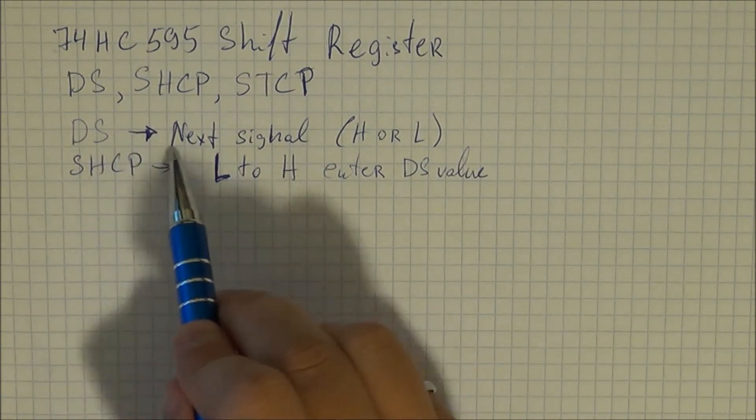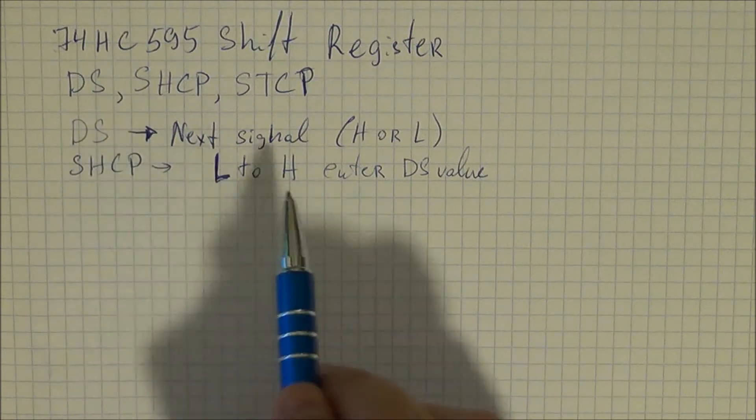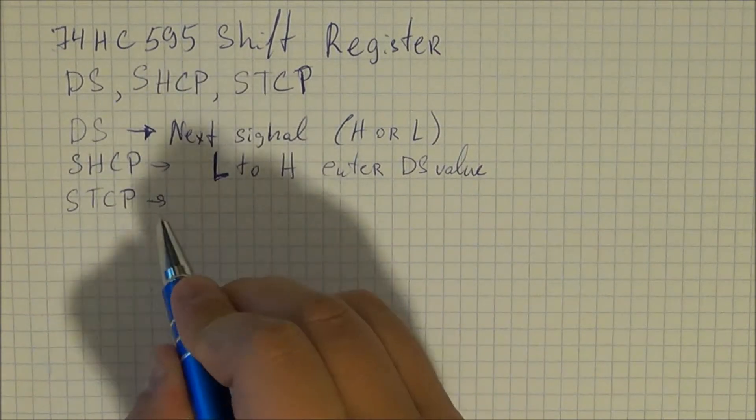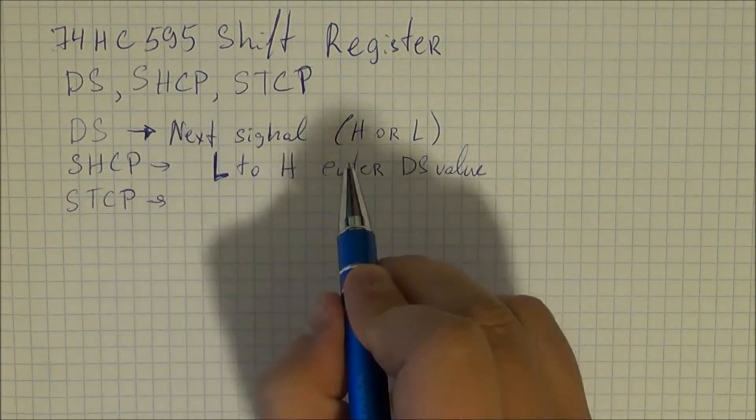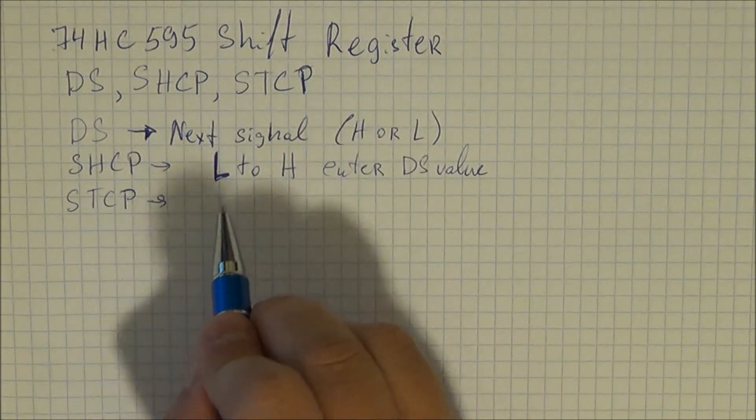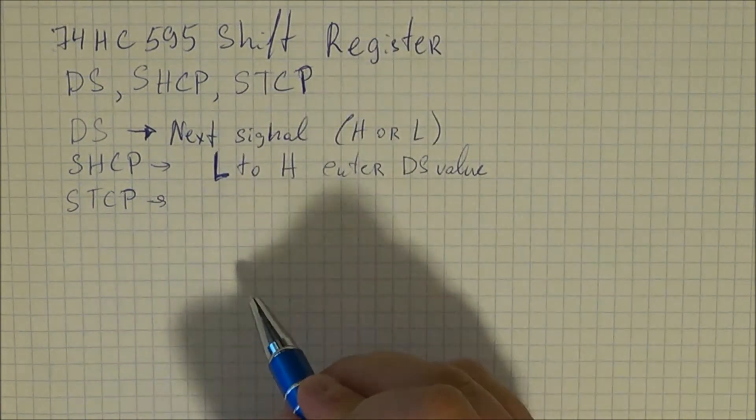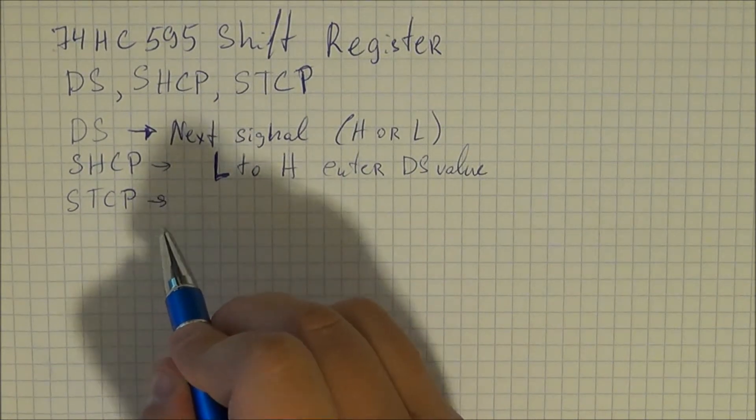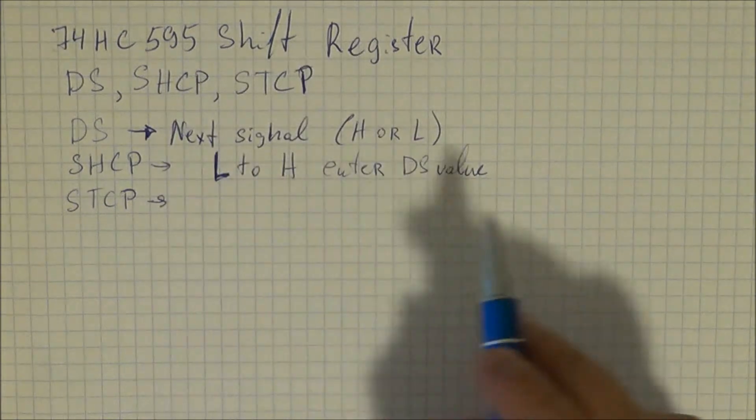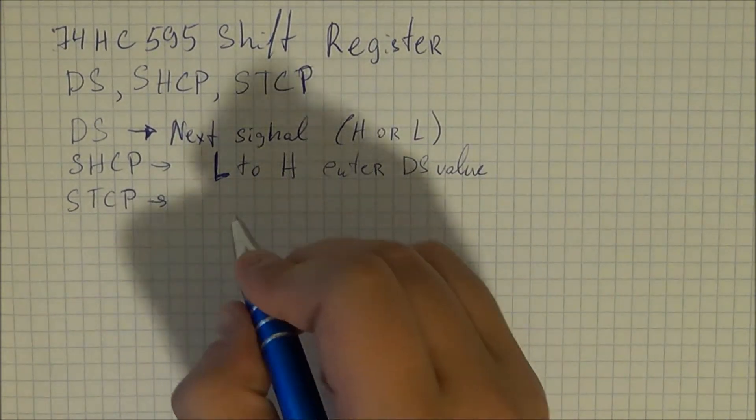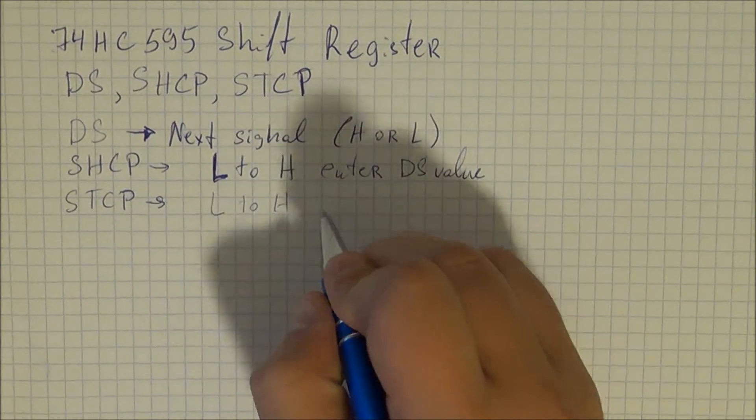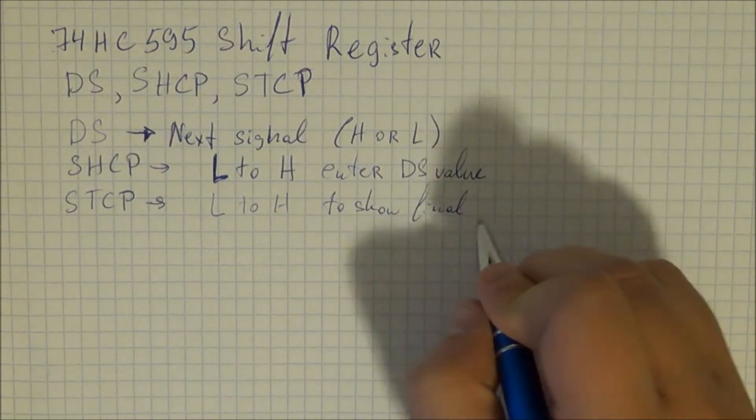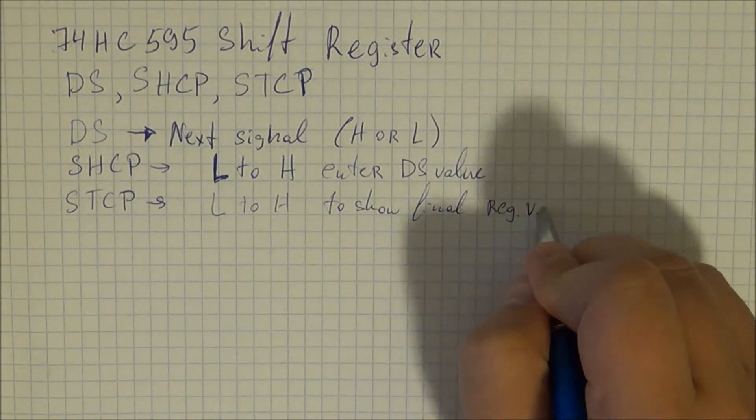So you can shift in a value for each one of them as you wish. So you can set DS one then you shift in one then you set zero then you shift in zero. And finally you have the STCP pin which is basically once you've entered your eight values so your eight bits you tell them to display on the actual LEDs. So this is basically a measure so that you don't show the shifting until you've actually committed to that change.